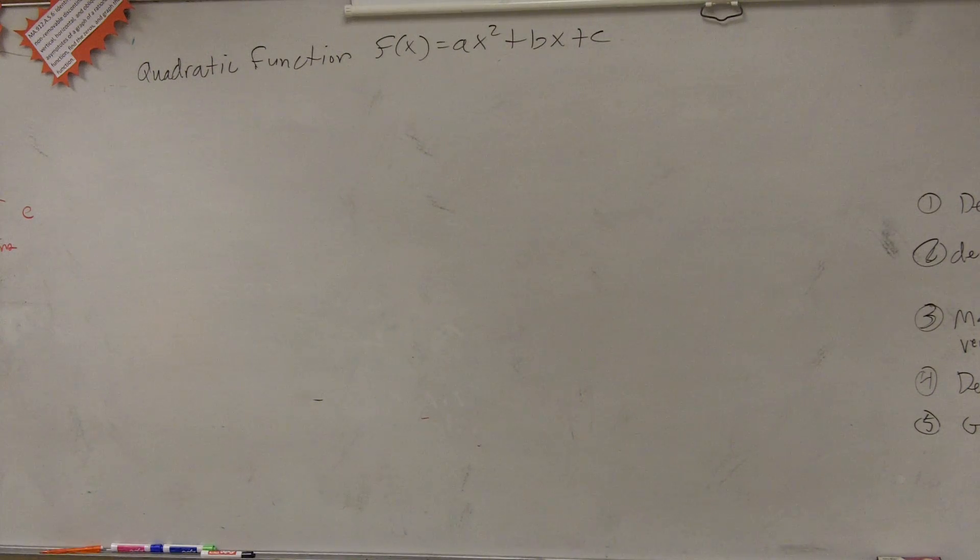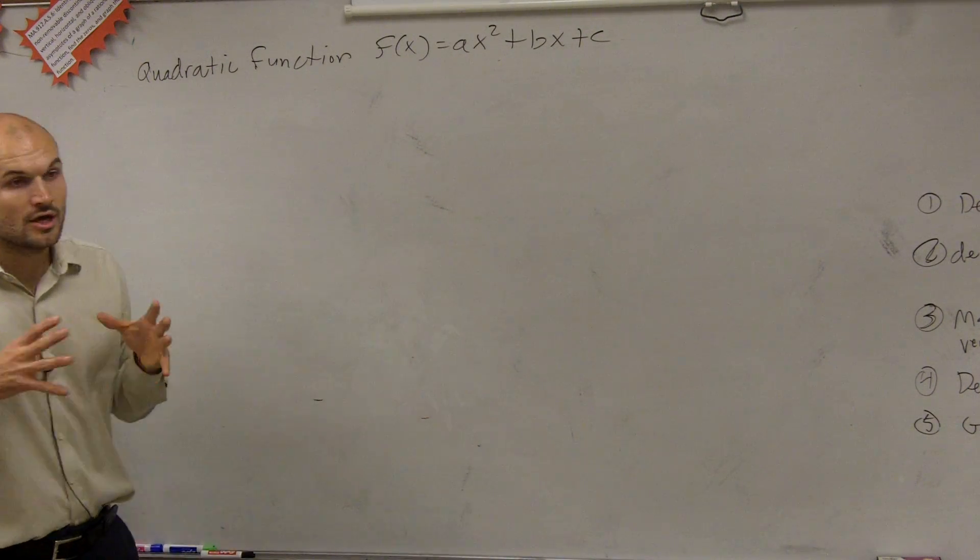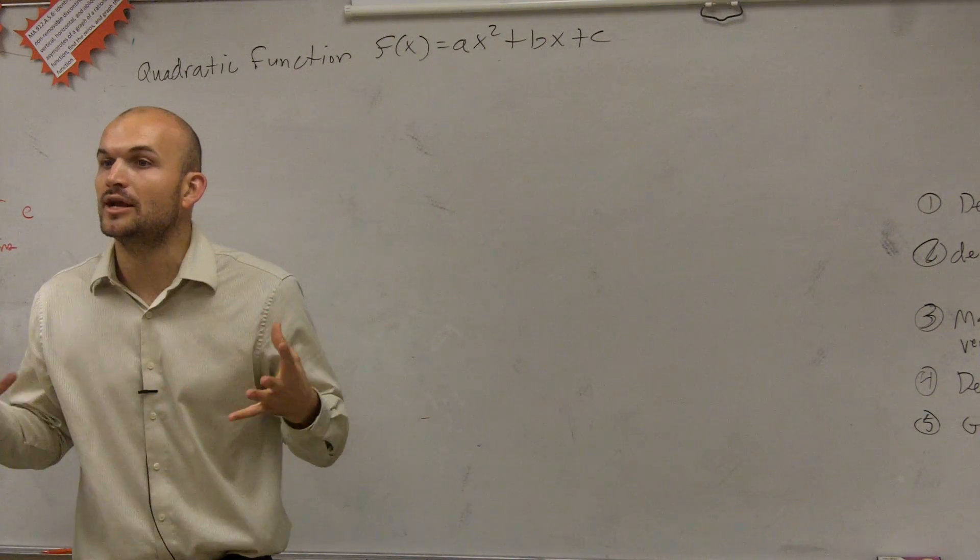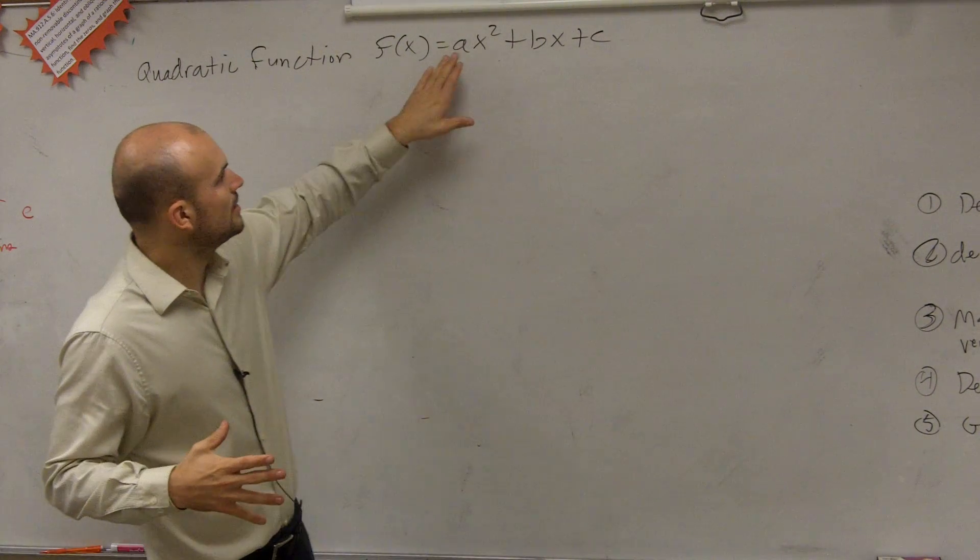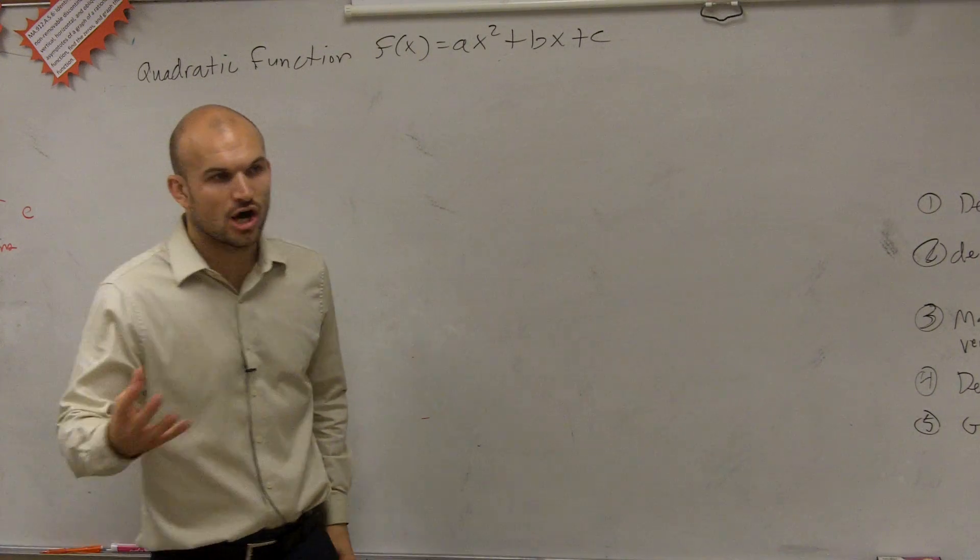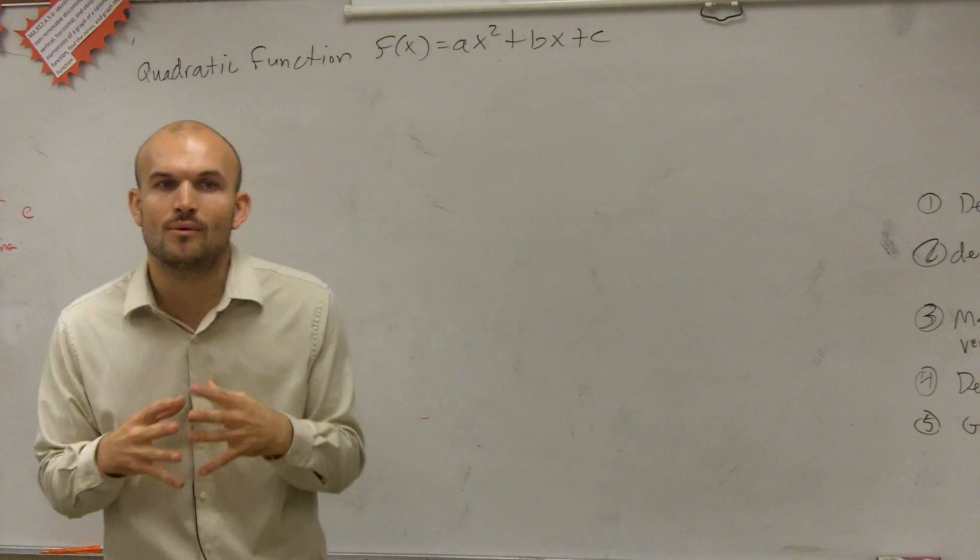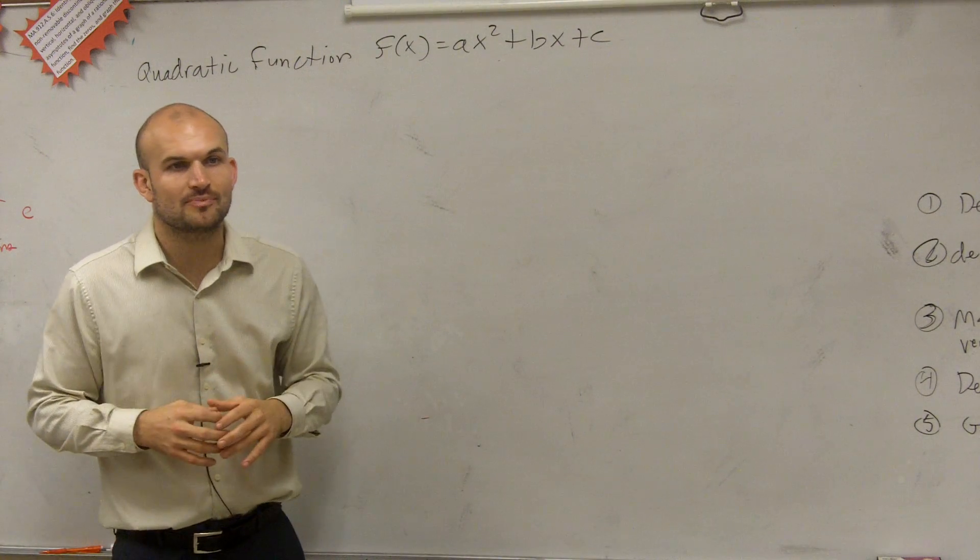So let's go and take a look here, ladies and gentlemen. What I want to remind you of is a quadratic function. Remember, we talked about a quadratic function can always be written in the form of ax squared plus bx plus c. Because as long as it's in quadratic form, we know that a cannot be 0, but we can always write it in the form ax squared plus bx plus c.